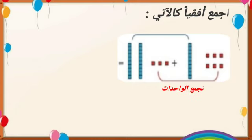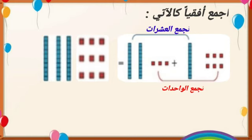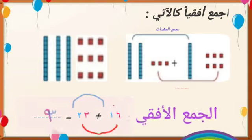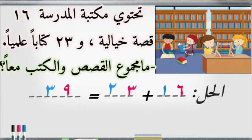حسناً، كيف يمكننا أن نجمع أفقياً هذه العملية؟ نمثل الأعداد أيضاً بالمكعبات. نجمع الآحاد مع الآحاد: ست مكعبات زائد ثلاث مكعبات يساوي تسعة. ثم نجمع العشرات: عشرة واحدة وعشرتان يصبح ثلاث عشرات. نكتب العملية: ستة عشر زائد ثلاثة وعشرون يساوي تسعة وثلاثون.